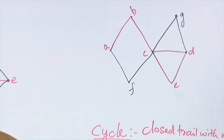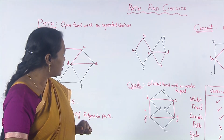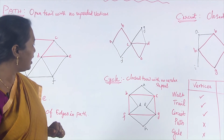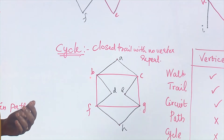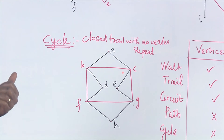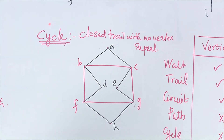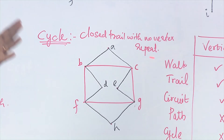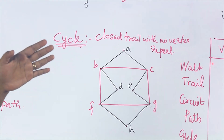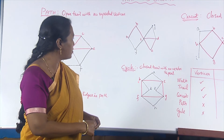Now we shall go on to the next definition: the cycle. A cycle is said to be a closed trail with no vertices being repeated. In this graph the cycle highlighted in red is B, C, C, G, G, F, F, B. You might wonder why B is repeated — but in a cycle, repetition of the initial and final vertex is allowed because a cycle is a closed structure. In between, you should not repeat any vertices. So B, C, C, G, G, F, F, B is an example of a cycle.